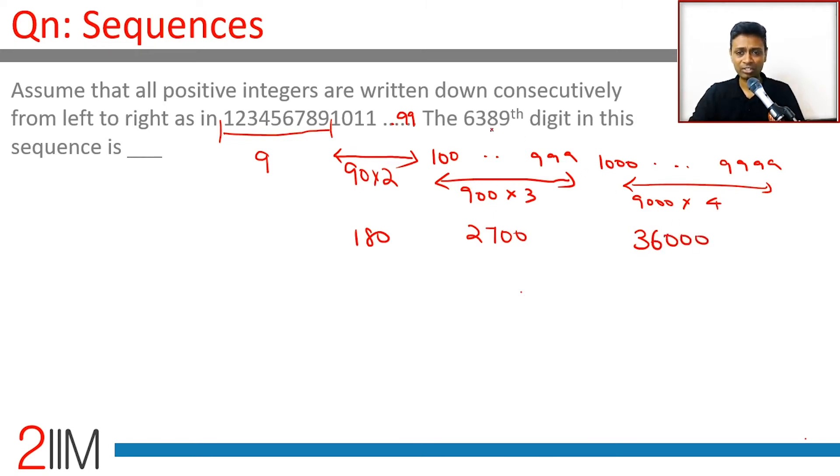So our number 6389th digit is somewhere coming in this range of 4-digit numbers. And so at the end of 999, let's think about how many digits get accommodated. So 9 plus 180 plus 2700, just 2889 digits get accommodated when you have come up to the number 999.